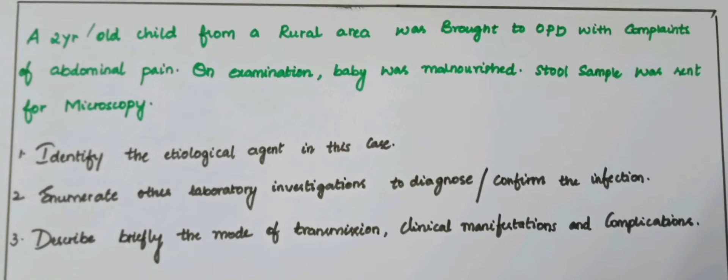Today I am going to discuss a clinical case scenario where a 2-year-old child from a rural area was brought to OPD with complaints of abdominal pain. On examination, the baby was malnourished and a stool sample was sent for microscopy. The first question: identify the etiological agent in this case.